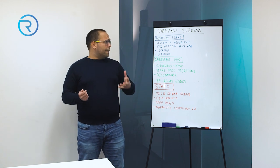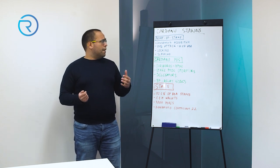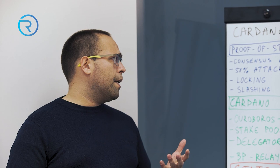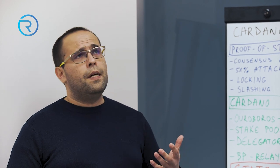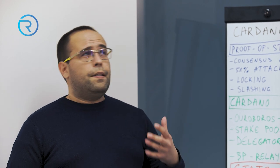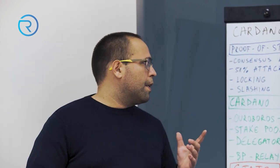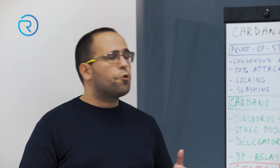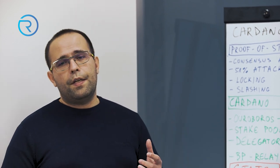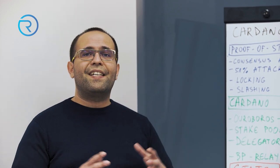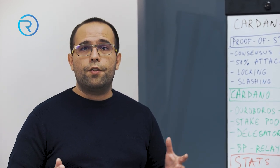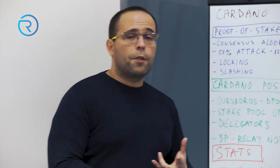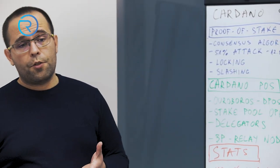There are two mechanisms usually implemented in proof of stake algorithms. They are not implemented in Cardano — we'll go over that a bit later — but they are employed to increase the security of the network. The first one is called locking and the second one is called slashing.